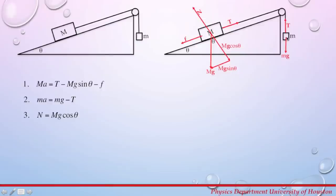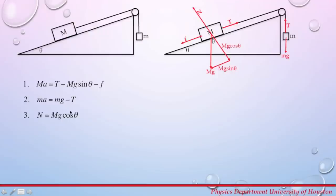For the small falling mass m, mg is in the positive direction and tension opposes motion, so we have minus T. The last equation states that the normal force and the component of gravitational force perpendicular to the surface are equal in magnitude but opposite in direction, giving N equals mg cosine theta. By measuring acceleration, masses, and angle of inclination, we can calculate friction force and normal force.